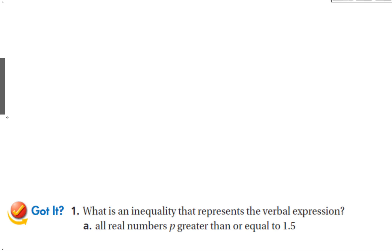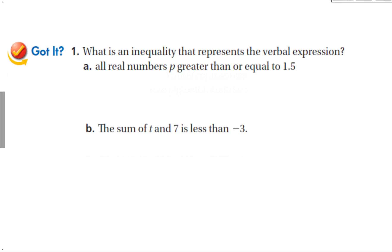Let's look at the guided problems. What is an inequality that represents the verbal expression? The first one says all real numbers p greater than or equal to 1.5 — so p ≥ 1.5. And then, the sum of t and 7 is less than negative 3 — the sum means addition, so t + 7 < -3.